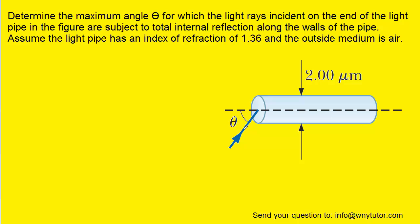But basically what's happening is the light ray is striking this end, and it's going to refract and travel into the light pipe, and then it's going to strike the boundary between the pipe and the air.